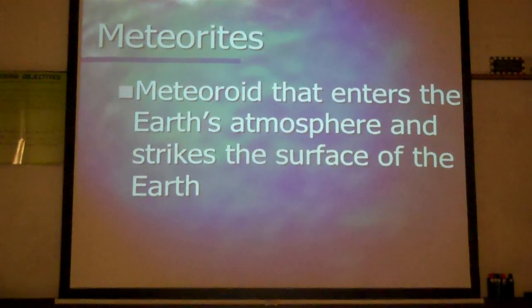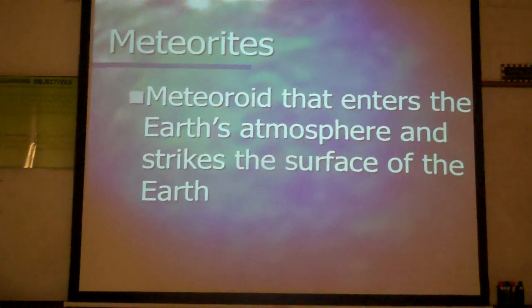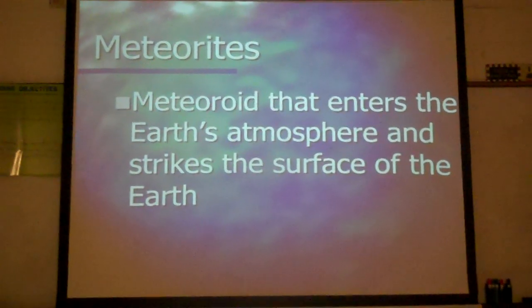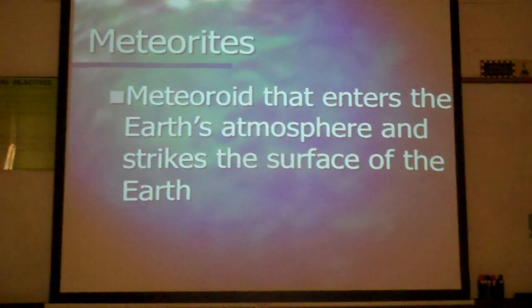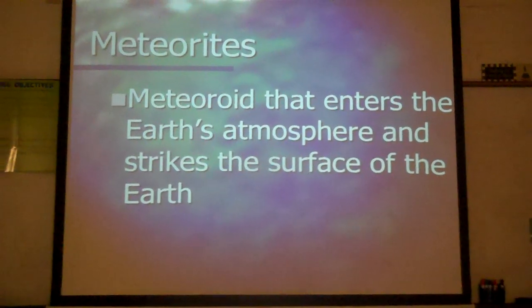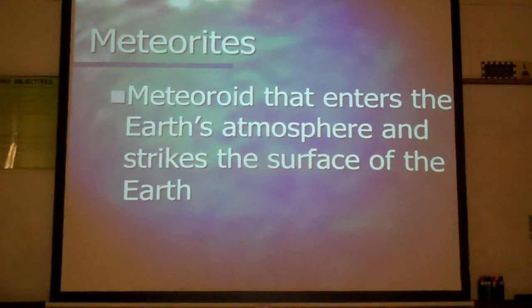Remember, meteoroid is the one that is still in space. Meteor is the one that has come through our atmosphere and is burning up and is called the shooting star. A meteorite is the one that makes it through our atmosphere and strikes the surface of the Earth, and it can also strike the surface of the Moon and other objects in space.